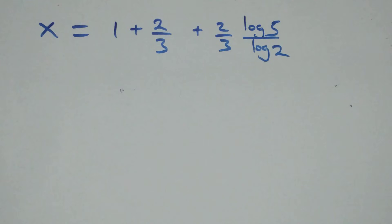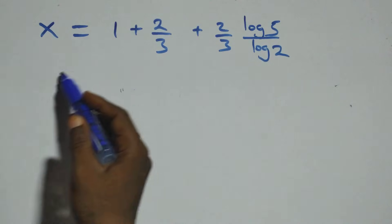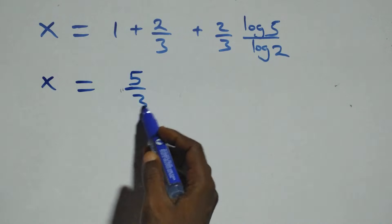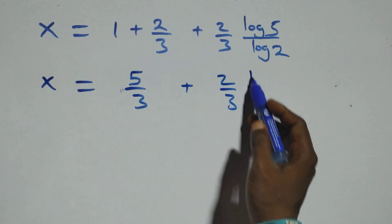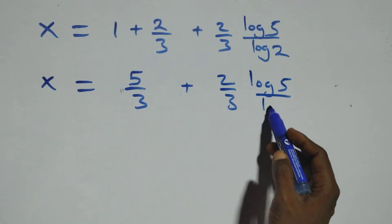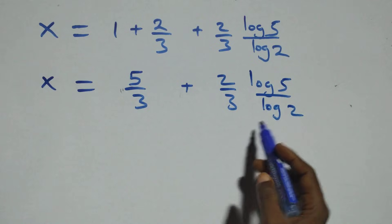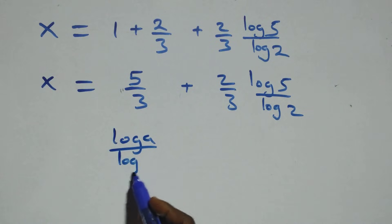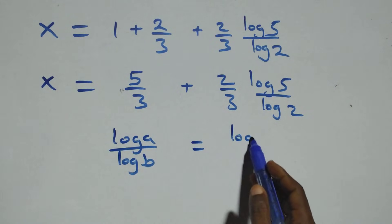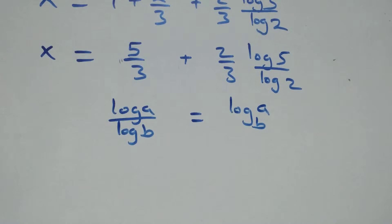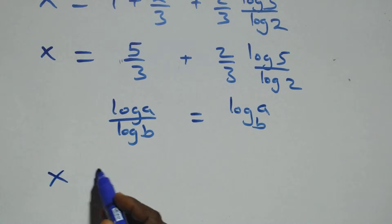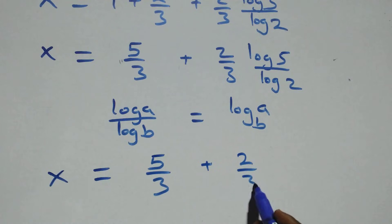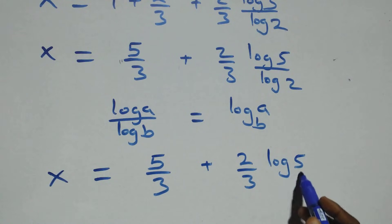From here, we have x equals to 1 plus 2/3, which is the same as 5/3, then plus 2/3 times log 5 over log 2. We apply the change of base formula: log A over log B is the same thing as log A to base B. So what we have becomes x equals to 5/3 plus 2/3 times log 5 base 2.